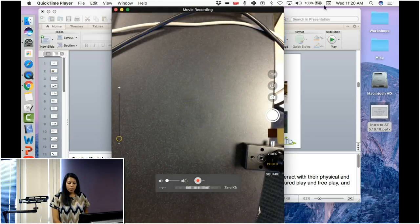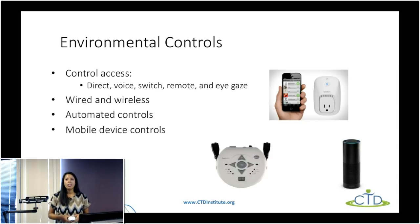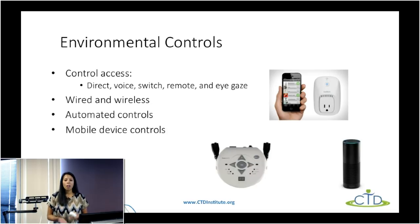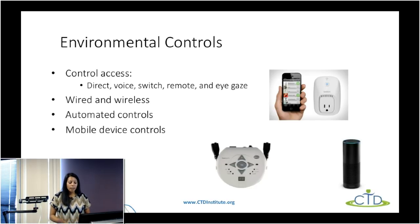Another example of an environmental control that a lot of people have heard of would be something like Alexa or the Amazon Echo. That's similar to the Belkin switch except with that you get to control multiple devices — people have set up smart thermostats, lights, smart bulbs — and all of that is controlled with your voice. You could say 'Alexa, turn on the living room light' and it would automatically turn on. It really just depends on what type of control you're looking for and what best suits the individual.